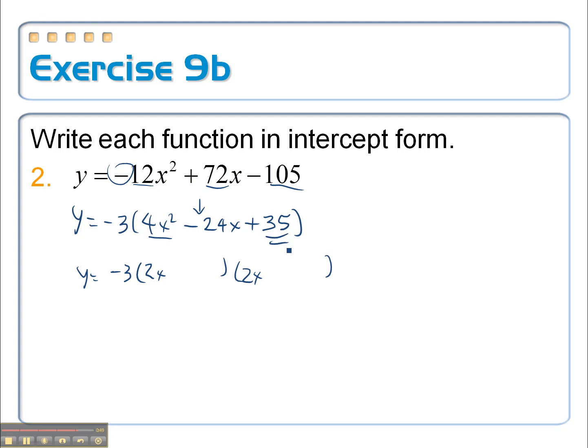And the last ones are going to add up to 35. How about a 7 and a 5? Both of these have to be negative since they're going to multiply to a positive and add up to a negative.